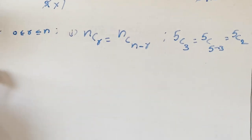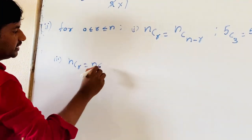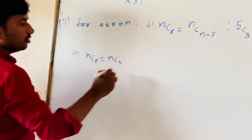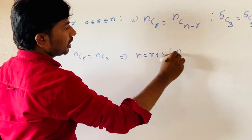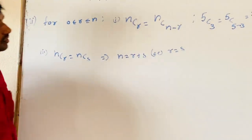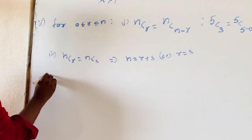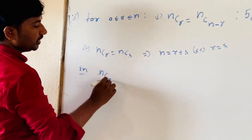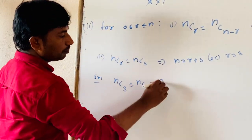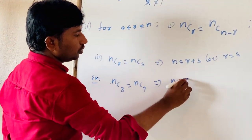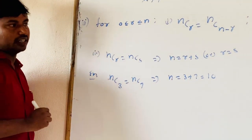The second formula: if NCR = NCS, then either N = R + S or R = S. For example, NC3 = NC7 implies N = 3 + 7 = 10. So N = 10.